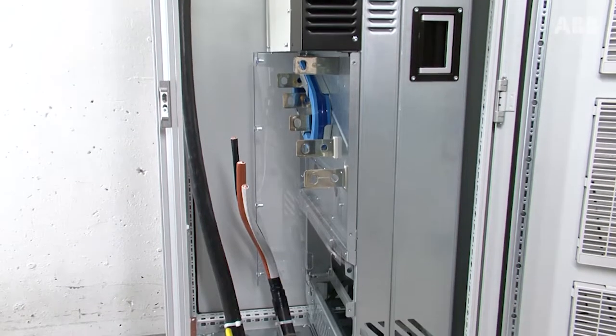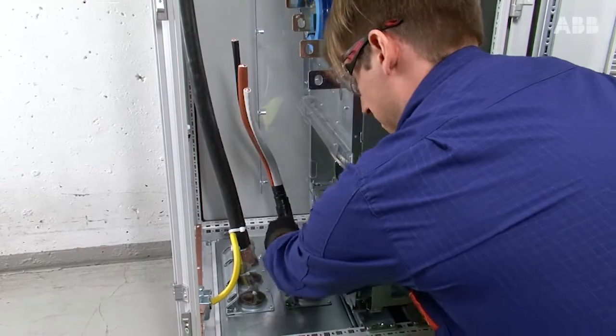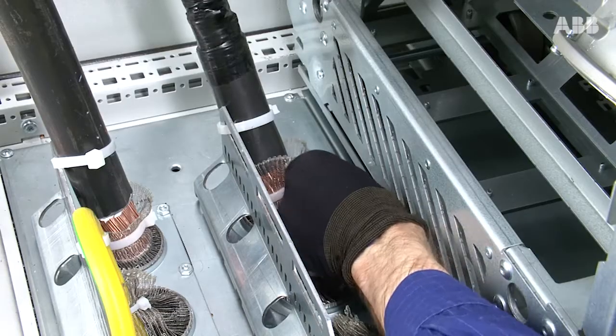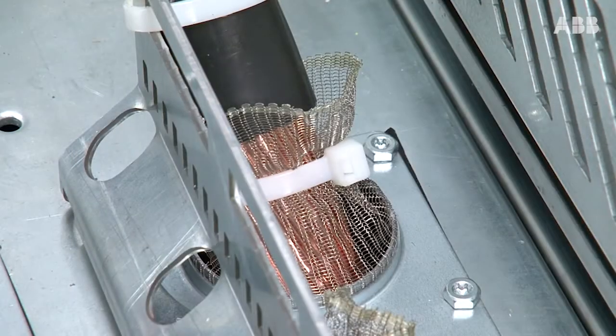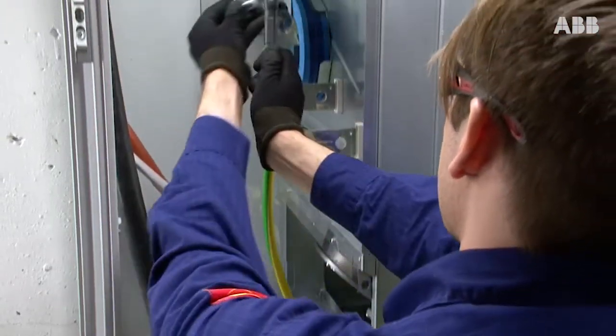After the power cables have been fed into the cabinet, make sure they are properly grounded for electromagnetic compliance. Also make sure the drive module is grounded properly.